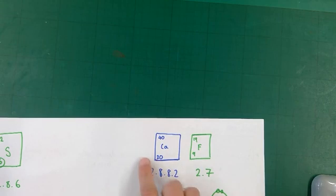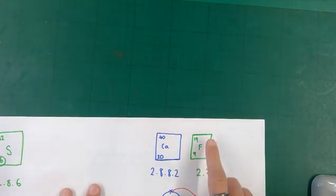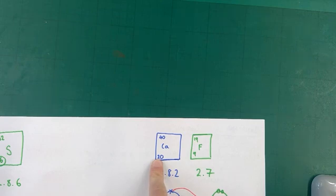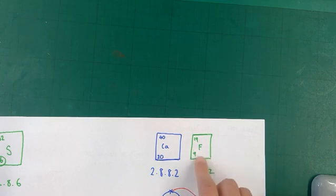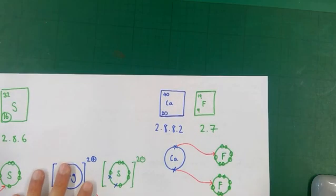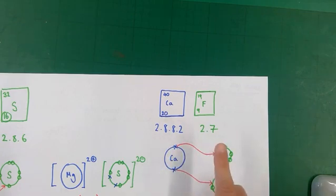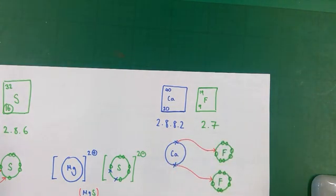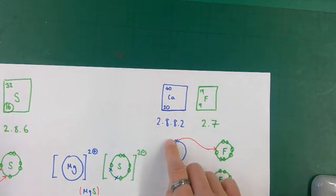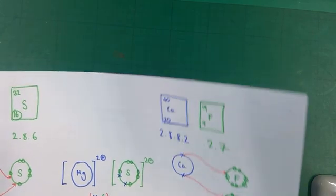For the final, slightly harder example: how do you draw a dot and cross diagram for calcium fluoride? First consider the original atoms: calcium has atomic number 20, so its electron configuration is 2, 8, 8, 2 - two electrons in the outermost shell. Fluorine has atomic number 9, so its configuration is 2, 7. Calcium is going to lose its 2 outermost electrons, but fluorine - with configuration 2, 7 - can only pick up 1 more electron until its shell is full. So you need 2 fluorine atoms, each picking up 1 electron from the calcium atom.